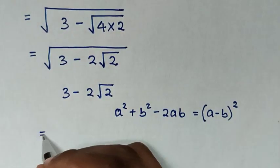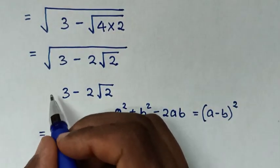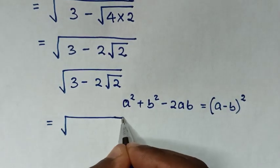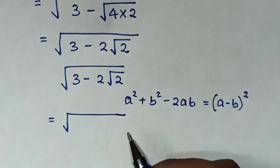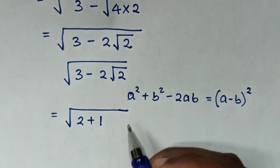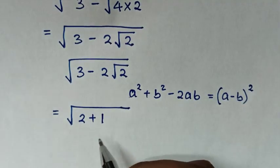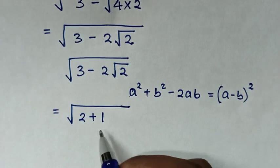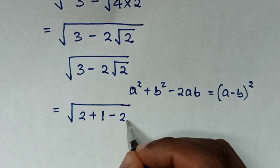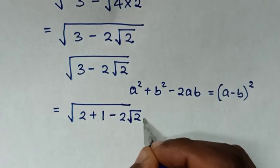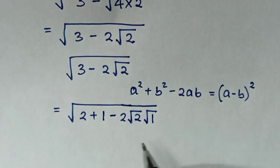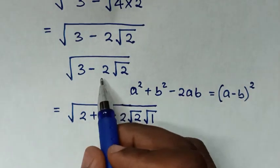So remember this expression was under the square root, so it will be square root of: we split 3 as 2 plus 1. So a squared is 2, plus b squared is 1, then minus 2ab which is 2 times square root of 2 times square root of 1. Since square root of 1 is 1, that gives us 2 square root of 2.